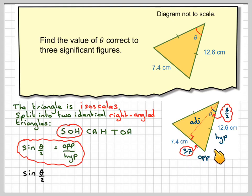So sine theta over two will be 3.7 divided by 12.6, and in order to find the angle theta over two we need to do sine to the minus one of 3.7 over 12.6.